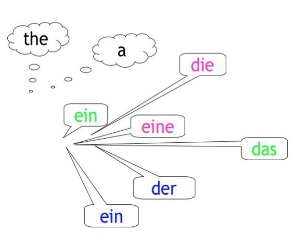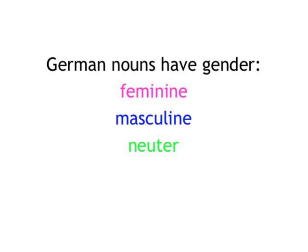In German, as in many other languages, nouns are categorised by gender. So every person, animal, or thing we're talking about gets tagged as feminine, masculine, or neuter. And in German, the article in front of the noun shows us its gender.